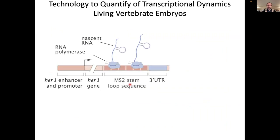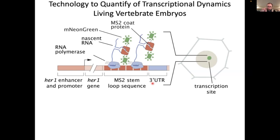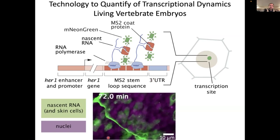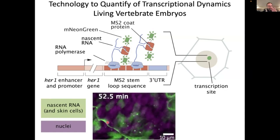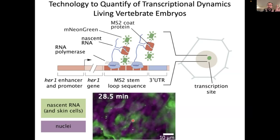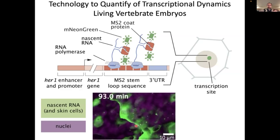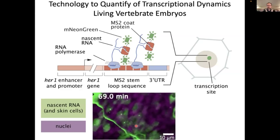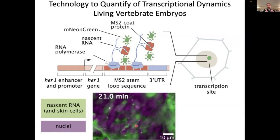The way we decided to look is by repurposing technology we've been developing in the context of the fruit fly called the MS2 system. Here's how it works: we grab the HER1 gene and add a little sequence that, when transcribed, forms a loop. The loop is recognized by a binding protein fused to GFP, such that every nucleus in the embryo will have a little spot of fluorescence, and the fluorescence of that spot will be proportional to how many polymerase molecules are actively transcribing the gene. This is the first time anybody can see transcriptional dynamics in single cells of a vertebrate embryo.